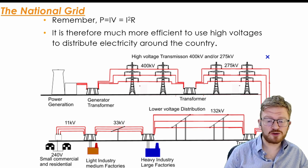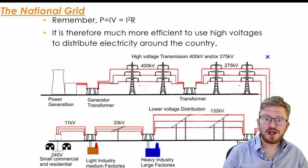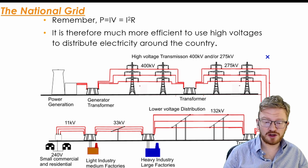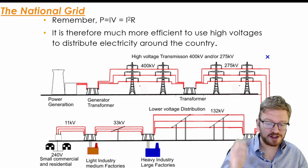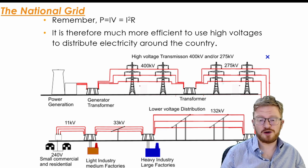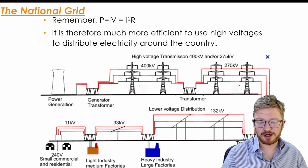Now why do we bother using transformers? Well, it's pretty simple. If you remember from electricity, we know that the power in something is IV, and you can then show how that becomes I squared times R.